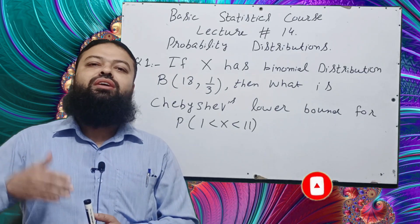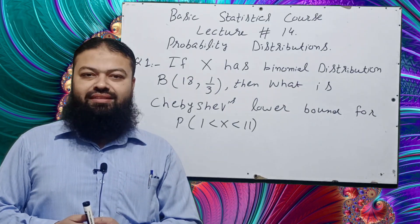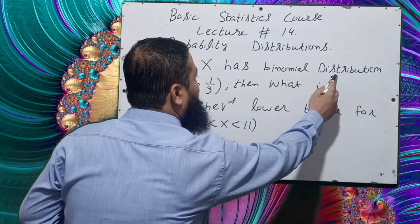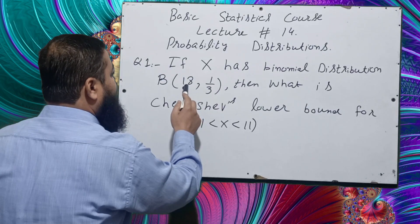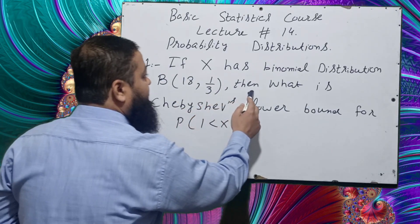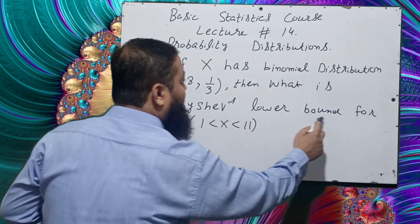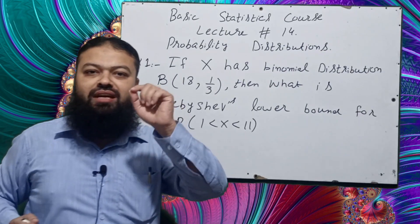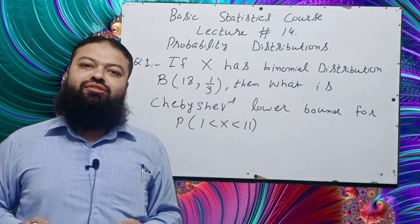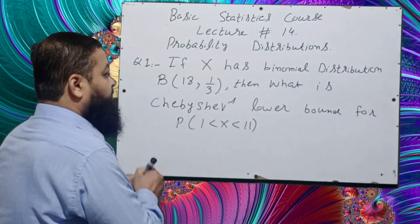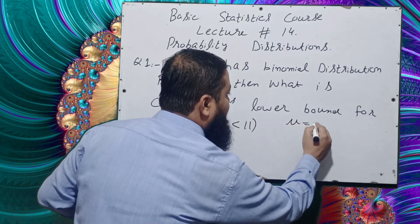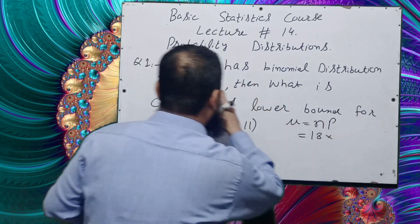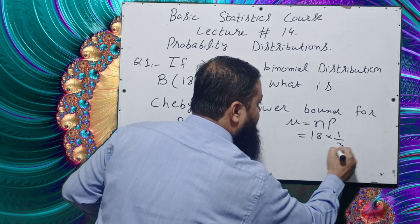Question number one: if X has a binomial distribution with parameters n = 18 and P = 1/3, then what is Chebyshev's lower bound for the probability P(1 < X < 11)? A very important question for all written tests of statistics. First of all, we will have to find out the mean. In binomial, the mean is NP. N is given as 18, multiplied by P which is 1/3. Cancelling 3 into 18, that will be 6.